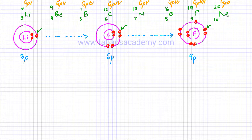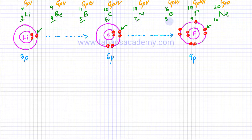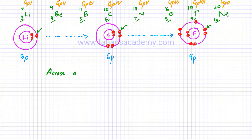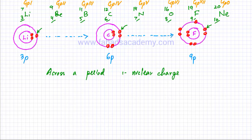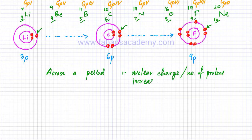There are five factors that affect ionization energies. As you move across the period, you'll notice that lithium has three protons, beryllium has four, boron has five, then six, seven and so on — the nuclear charge continuously increases. So the first factor we notice across a period is that nuclear charge, or the number of protons in the nucleus, increases.